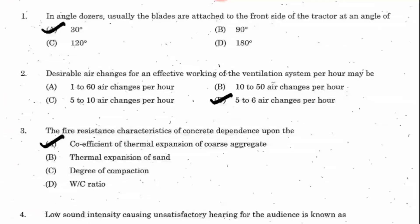Question number 2: What are the desirable air changes for effective working of a ventilation system? In a ventilation system for effective working, we can change the air 5 to 6 times. So option D is the answer.